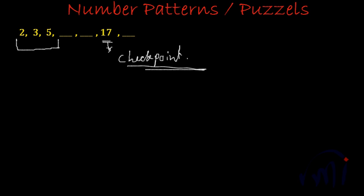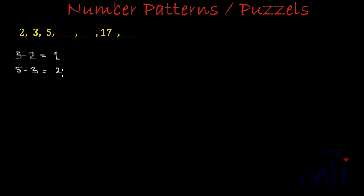So again let's start from the beginning. We have three numbers and at first go it looks like a Fibonacci series. Let's also find the differences: 3 minus 2 is 1 and 5 minus 3 is 2. At first go it looks like Fibonacci series, so let's assume if it is a Fibonacci series.